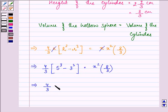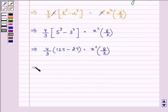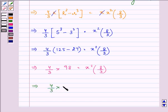Further, we have 4/3 × 98 equal to x² × 8/3. Which is 4/3 × 98 × 3/8 equal to x².